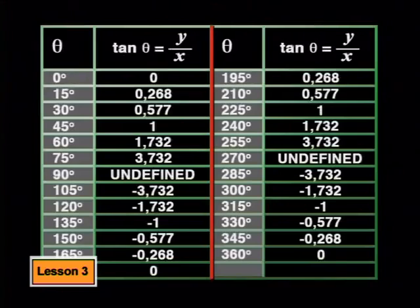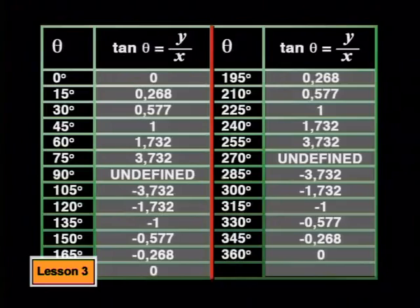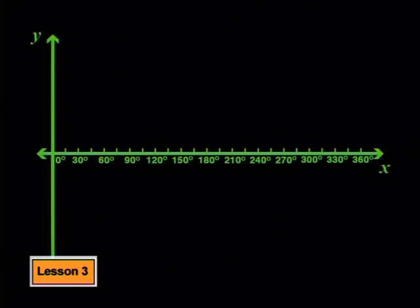We can plot the graph from these points in the table. We'll plot the independent variable, which was the angle value on the x-axis, going from 0 degrees to 360 degrees. The tan ratio depends on the angle size, so it's the dependent variable, and we'll plot those values on the y-axis. We'll mark the y-axis for every unit from about negative 6 right up to positive 6. That gives us some space for the graph to increase or decrease further than the values that we have in the table. Now, we are ready to plot the graph of the function.